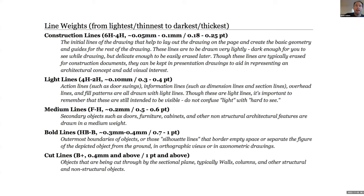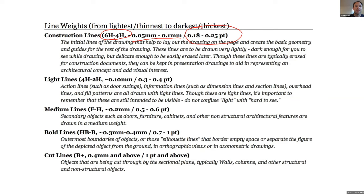This line weight slide is great because it discusses things in graphic form, in AutoCAD terms, and in Illustrator terms. For construction lines, you'd use a 6H or 4H lead by hand, 0.05 or 0.1 mm in AutoCAD, or 0.18 to 0.25 point in Illustrator. Light lines — door swings etc. — would be 2H or 4H by hand, 0.1 to 0.18 mm in AutoCAD, and 0.3 to 0.4 points in Illustrator. Remember: the last number is always Adobe Illustrator.